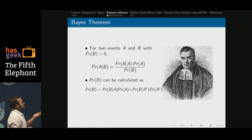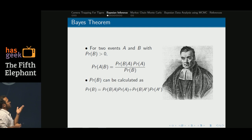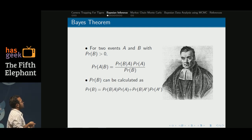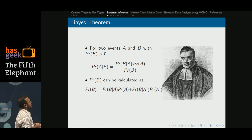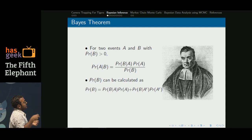Now we will talk about the classical Bayes theorem, which is used everywhere today. The probability of A given B is obtained from three different quantities: the probability of B given A, the probability of A, divided by the probability of B. The probability of B can be calculated as a sum of two terms — B occurring with A, and B occurring but A did not occur.